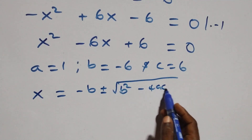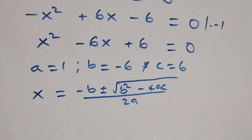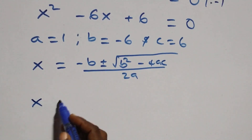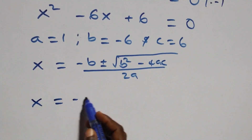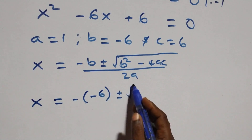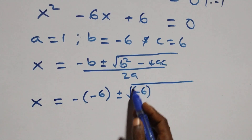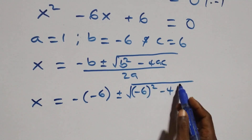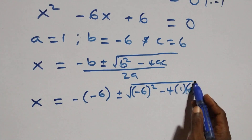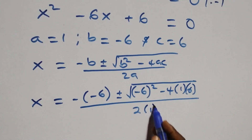Substituting the values, we have x equals minus (minus six) plus or minus square root of (minus six) squared minus four times one times six, all over two times one.